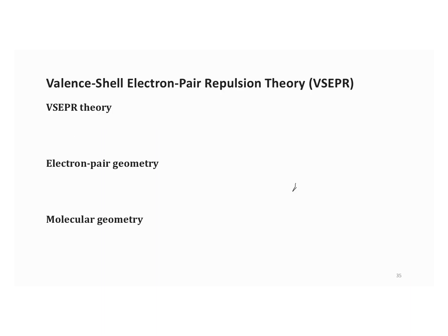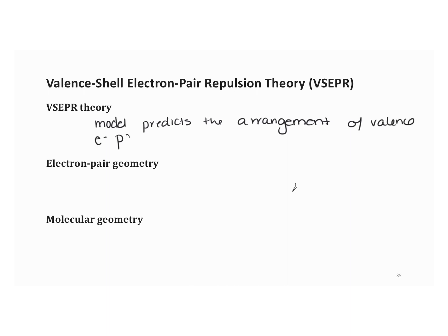Let's talk about valence shell electron repulsion theory. Valence shell electron repulsion theory is shortened to VSEPR. Basically, VSEPR is a model that predicts the arrangement of valence electron pairs around a central atom to minimize repulsion. When we talk about repulsions, electrons are negative, and just like magnets, they will repel each other.